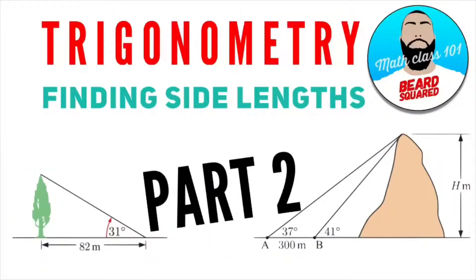Hey, welcome back to Bear Squared. In this video, part 2 trigonometry, we're going to be learning about finding the side lengths of a right angle triangle using the trig ratios. Coming up.